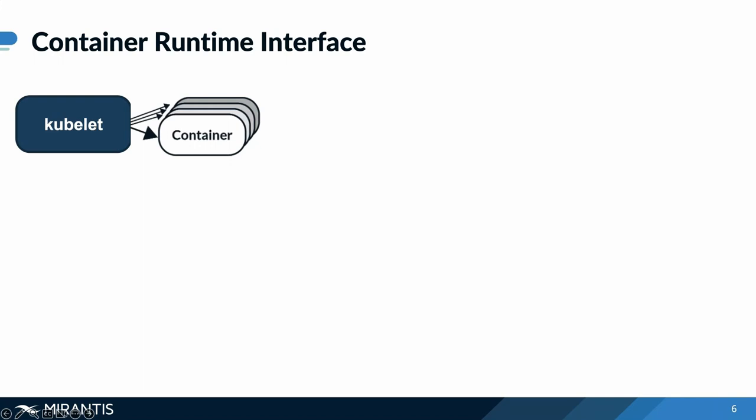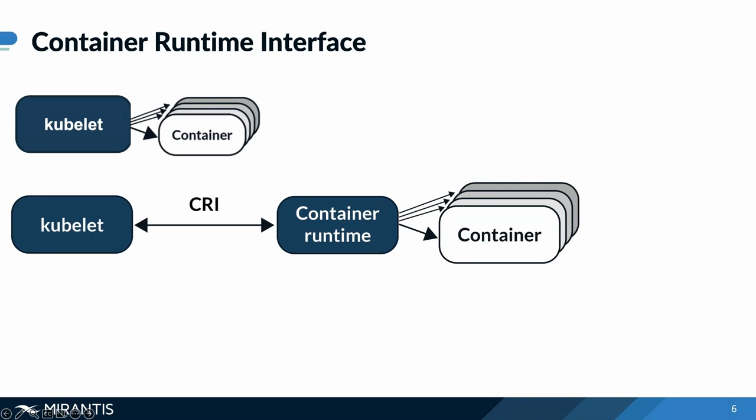The CRI acts as an abstraction that standardizes the way different container runtimes interact with Kubernetes — specifically how those runtimes interact with the Kubelet. This abstraction layer makes it easier to integrate different runtimes with Kubernetes, or if you wanted to also develop new runtimes, and it brings greater flexibility. The Kubelet communicates with the CRI shim for the runtime over Unix sockets using the gRPC framework, a Google-created RPC framework, where the Kubelet acts as a client and the CRI shim acts as a server.